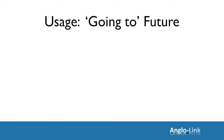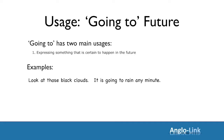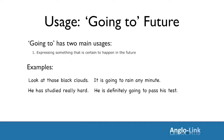Now let's look at the usage of the going to future. Again, there are two main usages. The first one is to indicate some form of certainty for the future — something that's certain to happen. For example: Look at those black clouds — it's going to rain any minute. He has studied really hard — he's definitely going to pass his test. The roads are all blocked — we're going to miss our flight.